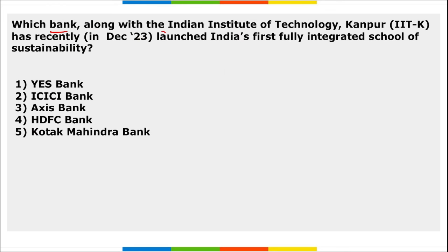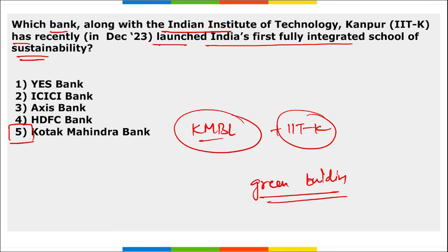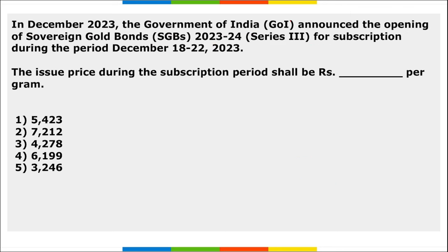Next: which bank, along with IIT Kanpur, has recently launched India's first fully integrated School of Sustainability? It is Kotak Mahindra Bank. They have partnered with IIT Kanpur to launch the Kotak School of Sustainability. The aim is to promote pedigree education, research, and outreach by focusing on homegrown capabilities, set up in a green building focused on sustainable development goals.